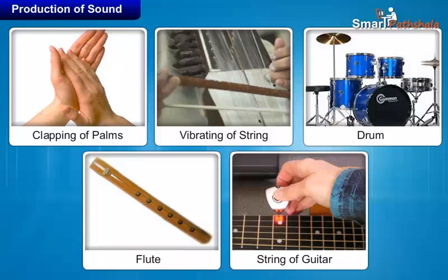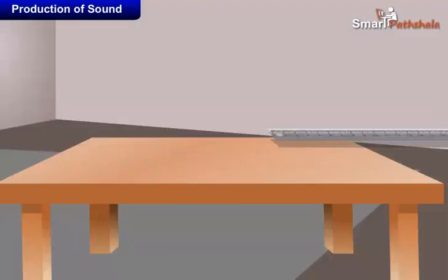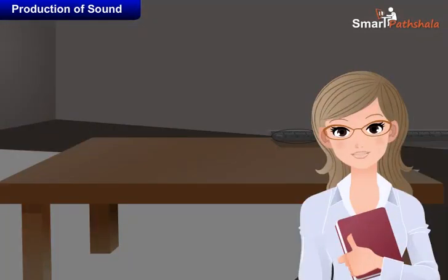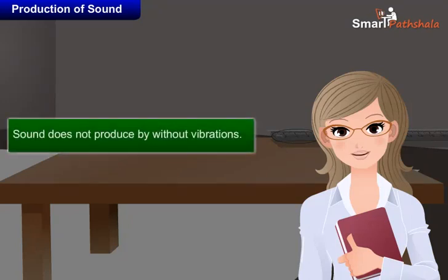Now let's discuss this module by the help of an activity. Hold down the ruler from one end of the bench. Flick the other end to make a sound. Look at the end of the ruler — what is it doing? The free end of the ruler vibrates and produces sound. From the above activity, what do you conclude? Can you produce sound without a vibrating object? No. We conclude that sound is not produced without vibrations.